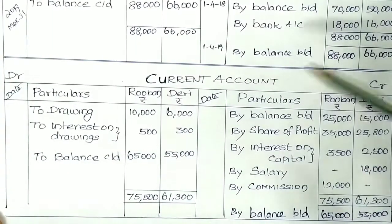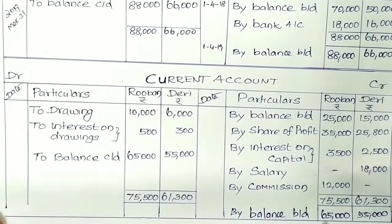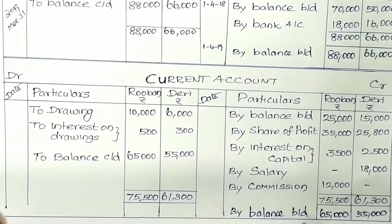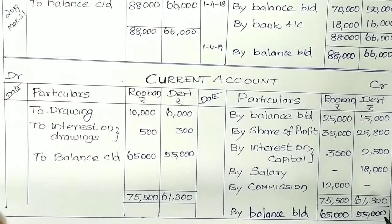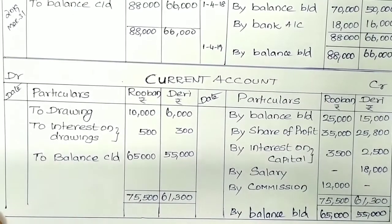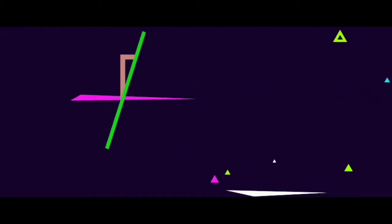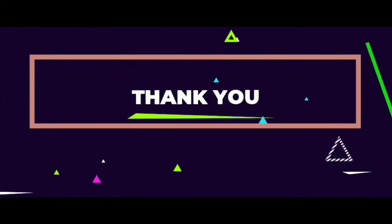The closing balances of 65,000 and 55,000 become the opening balances for the next year, entered as balance brought down. That's all. Thank you.